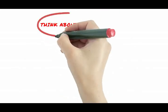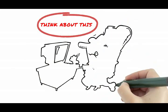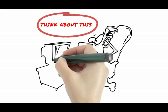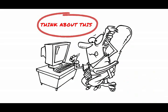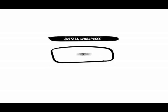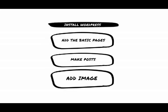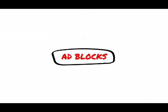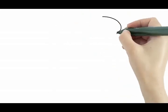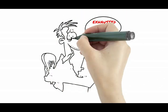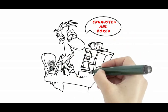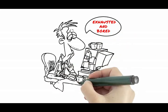Think about this: regardless of the keywords and niche you choose, you are essentially going to follow the same steps for each of your AdSense blogs — install WordPress, add the basic pages, make posts and add the occasional image here and there within your content, and then place ad blocks. Don't you think you could eventually get exhausted and maybe even bored of doing this again and again for all your AdSense sites?